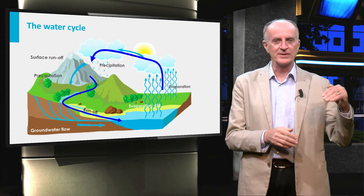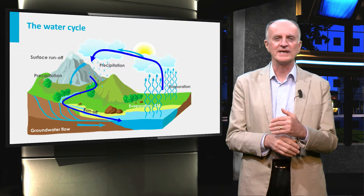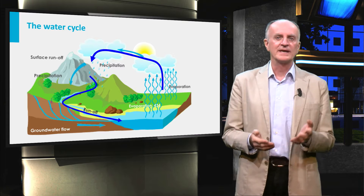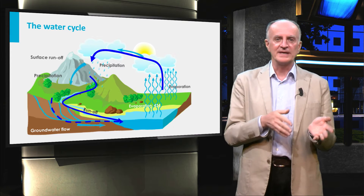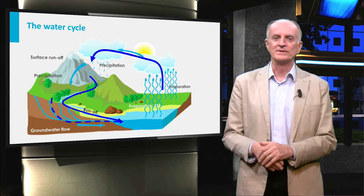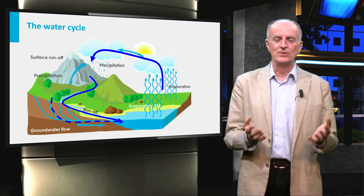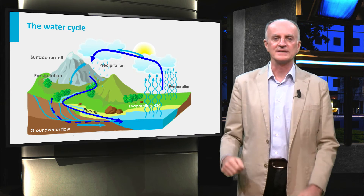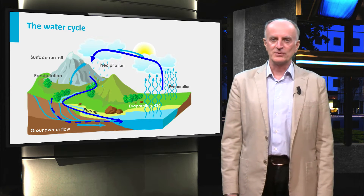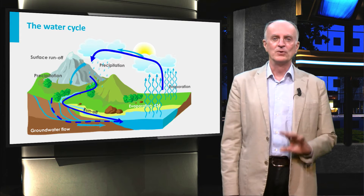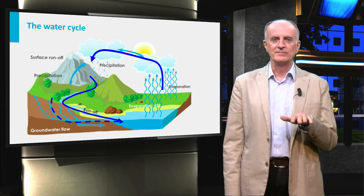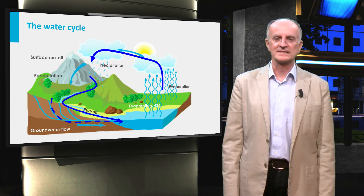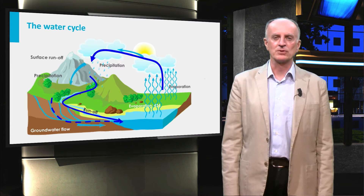Precipitation can either go along the ground, in which case one talks about runoff, or can infiltrate into the ground. Following different paths, all waters will eventually reach rivers and the sea. In this model, we only look at the sub-aerial path. We will focus on the underground one in module 6, the hydrogeology module.